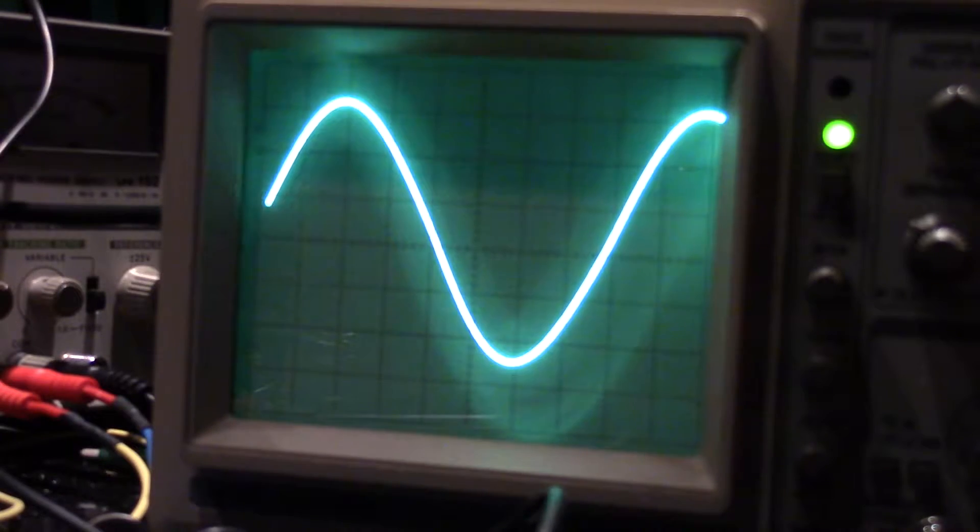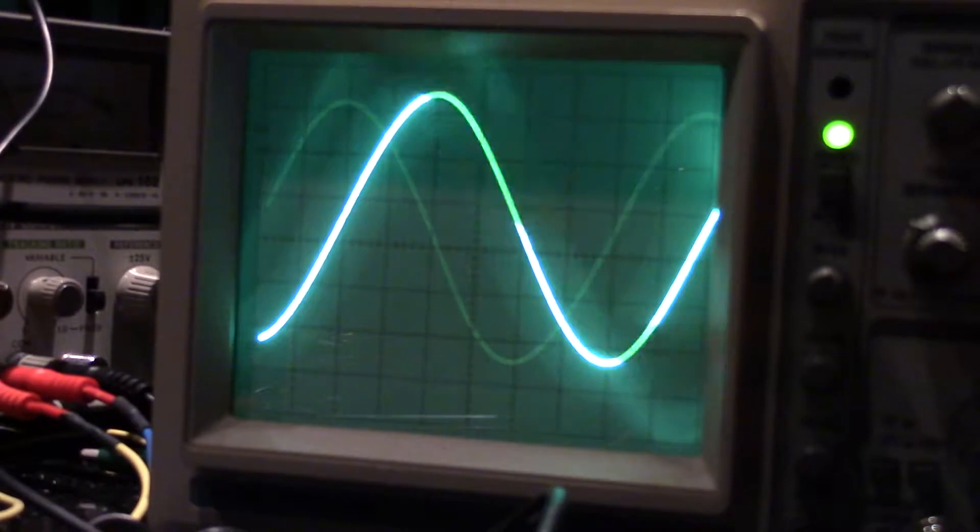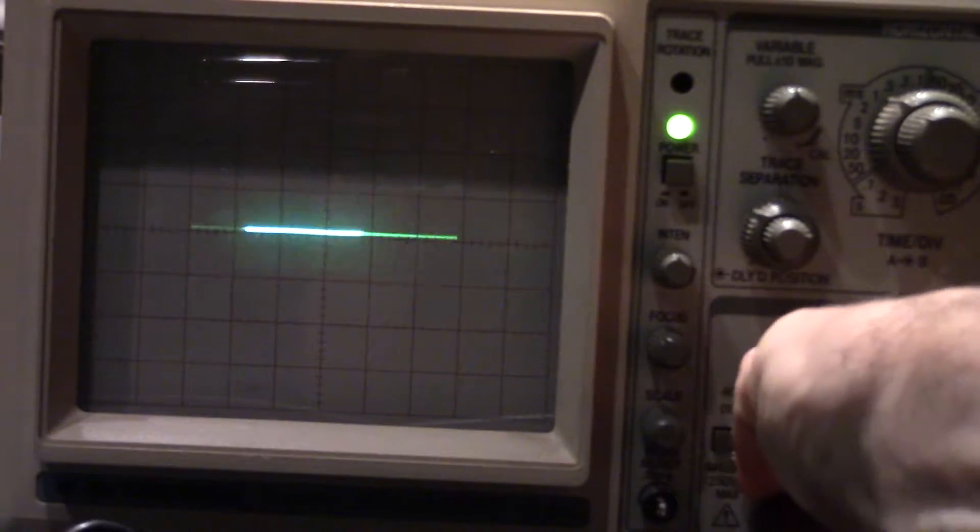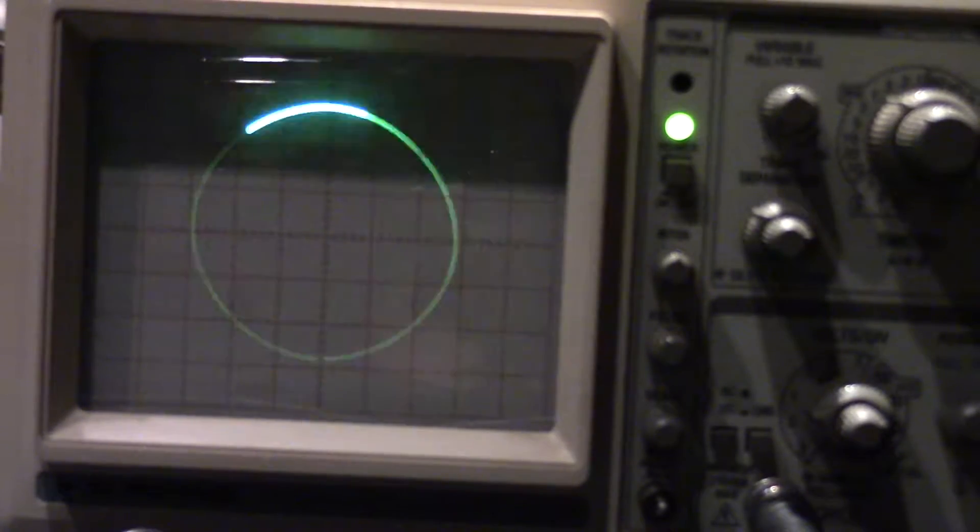First a little background. A sine and a cosine are 90 degrees out of phase. If you attach a sine wave to the X input of the oscilloscope and the cosine to the Y, the oscilloscope will trace a circle on the screen. Turn up the frequency and the point being drawn becomes almost invisible.